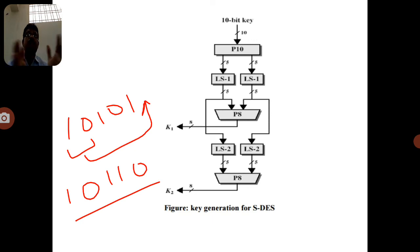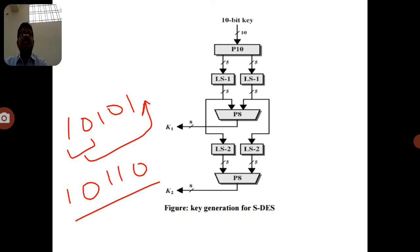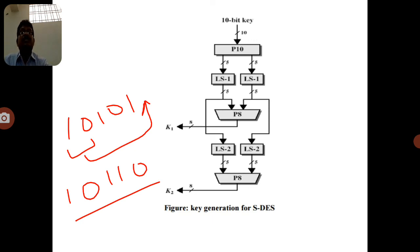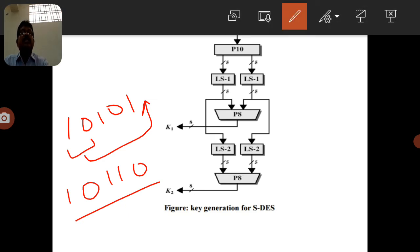Both LS2 data blocks are combined to form 10 bits again. The same P8 permutation is applied to this LS2 data, and finally we derive K2. So two keys are derived: K1 is 8 bits and K2 is also 8 bits.